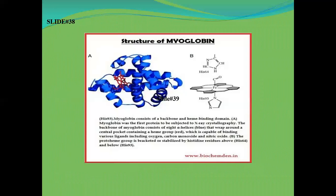Myoglobin has an enzymatic function. Looking at the structure of myoglobin, you can see its backbone and heme binding domain. Myoglobin was the first protein to be subjected to X-ray crystallography. The backbone of myoglobin consists of eight alpha helices that wrap around the central pocket containing a heme group.